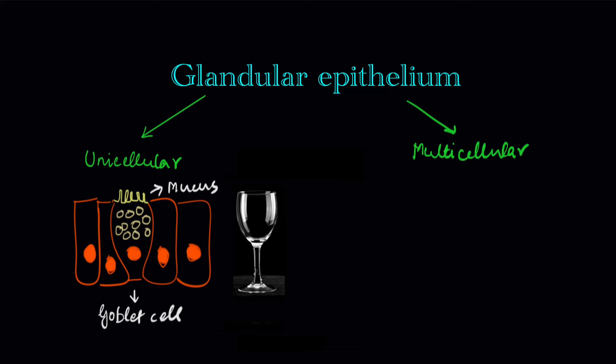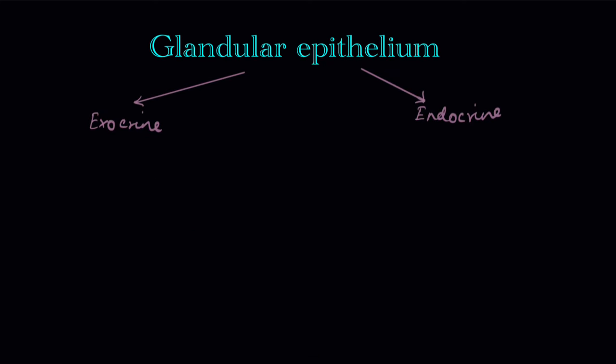The multicellular types of glandular epithelium are of course made of many cells. Be it unicellular or multicellular, glandular epithelium can be classified in another way — it can again be divided into two types: exocrine and endocrine.